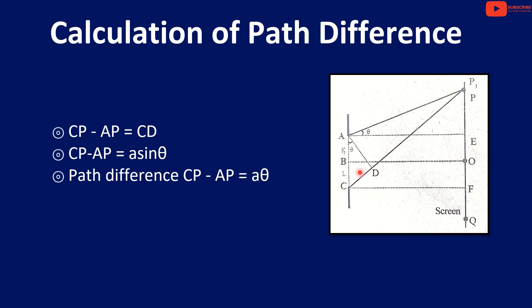We call the midpoint of AC as B. It will meet the point O at the front. The perpendicular line from C is AD. That is why we measure the path difference. The rays from C and A are called CP and AP respectively. CP minus AP gives us the path difference, which equals CD.